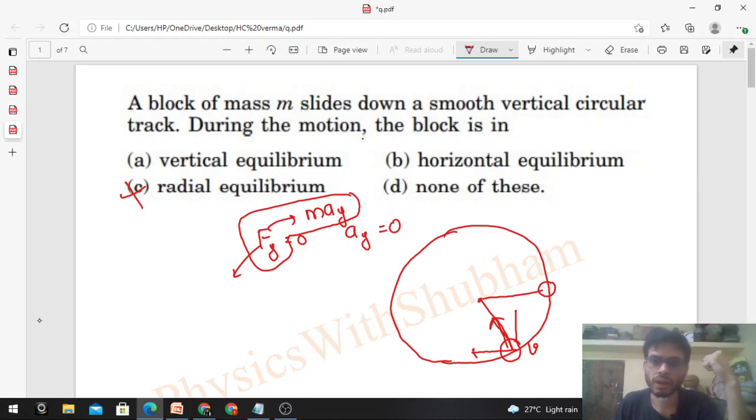So the particle will not be in horizontal as well as vertical equilibrium. Neither horizontal equilibrium nor vertical equilibrium, because we have a component of radial acceleration in horizontal and vertical direction. So option D is correct.